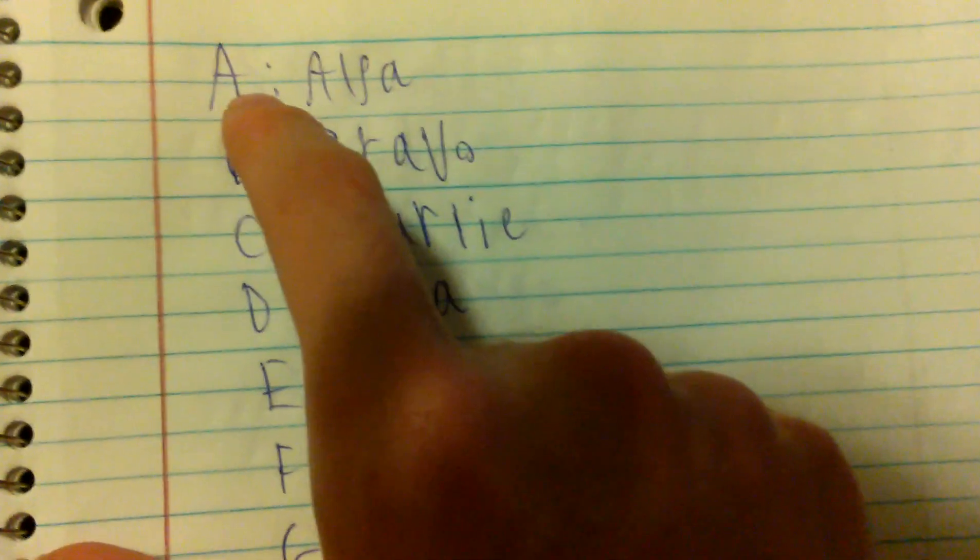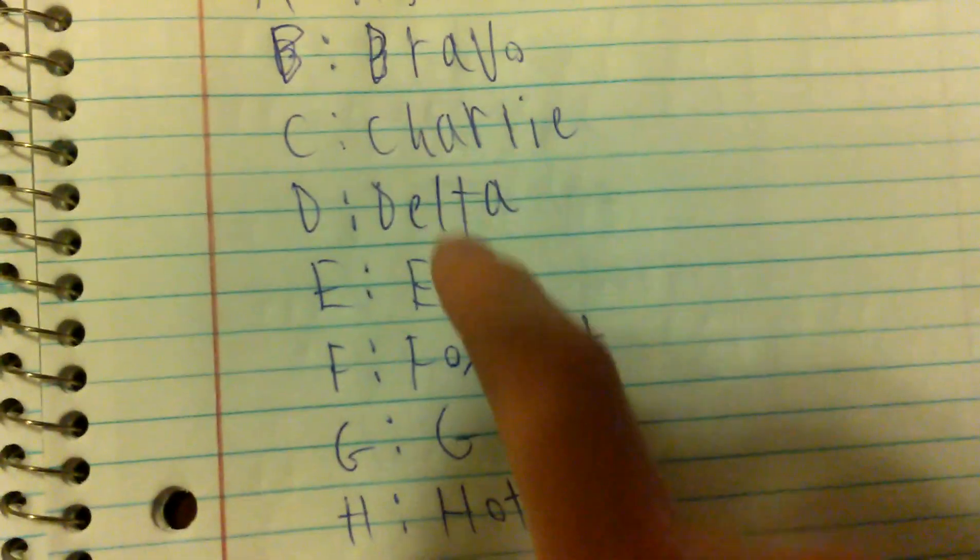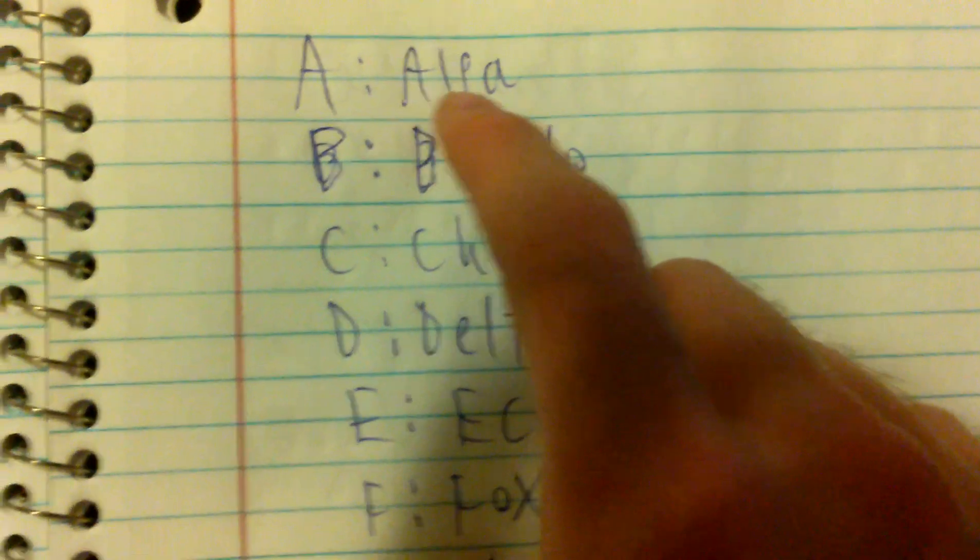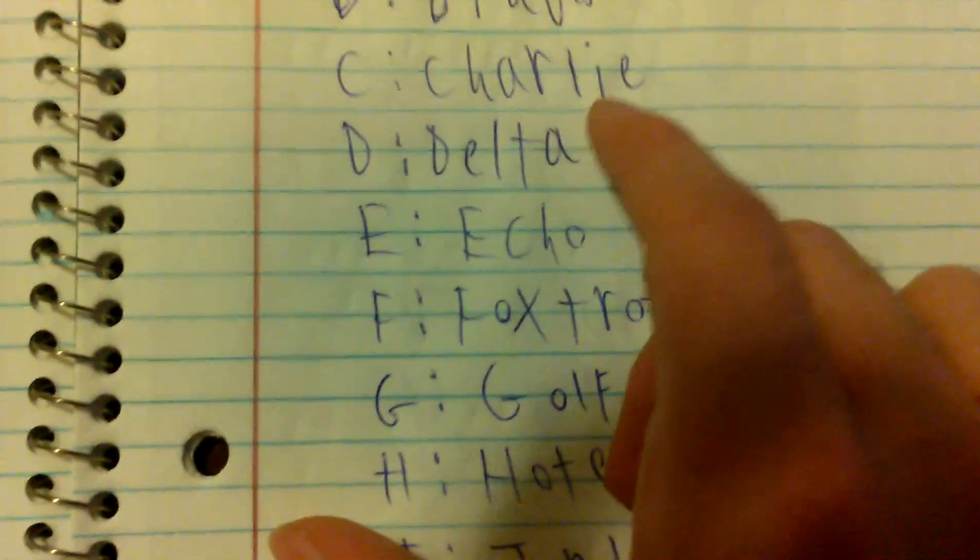Every letter is made up of a word if it's all by itself. You might be familiar with Alpha, Bravo, Charlie, and Delta, but not the rest of these.